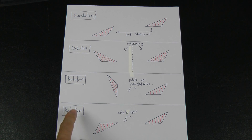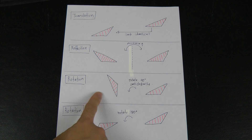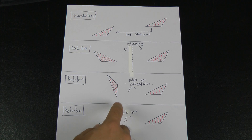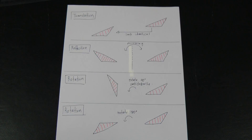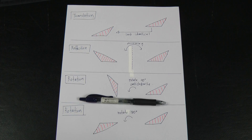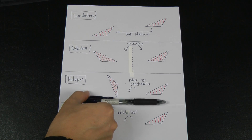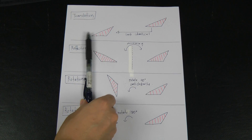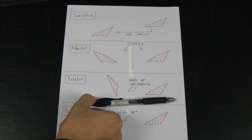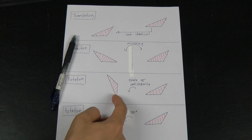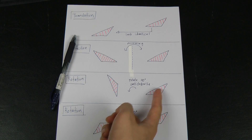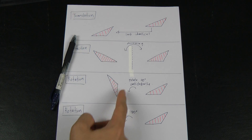For rotation, you need to understand rotation 90 degrees and rotation 180 degrees. For rotation 90 degrees, I normally find one horizontal line. After rotating 90 degrees, that horizontal line will become a vertical line — so a horizontal line becomes vertical. That's how I recognize rotation 90 degrees.